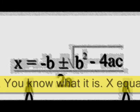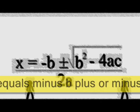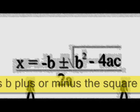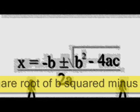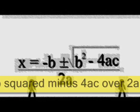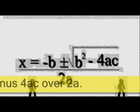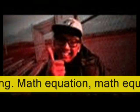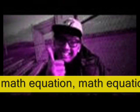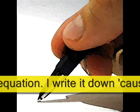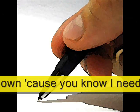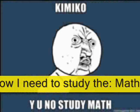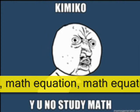X equals minus b plus or minus the square root of b squared minus 4ac over 2a. Step into school — when you see me, I know everything. Math equation, math equation, math equation, math equation. I write it down cause you know I need to study. Math equation, math equation, math equation.